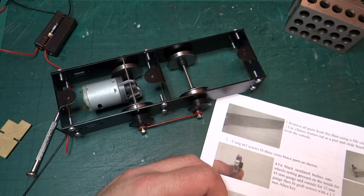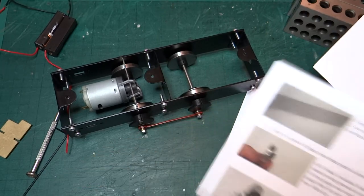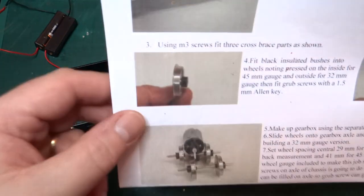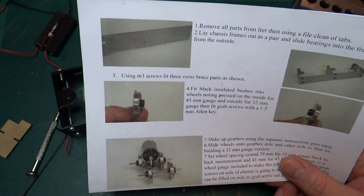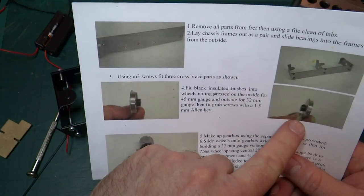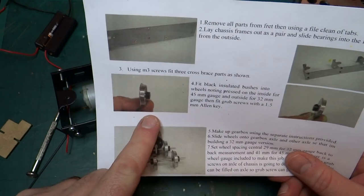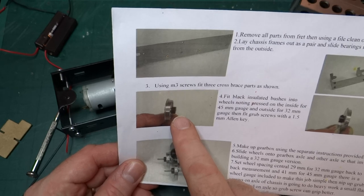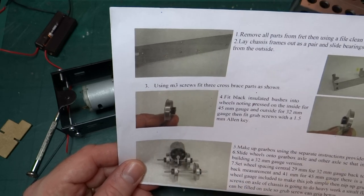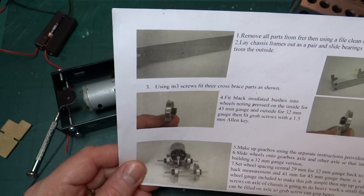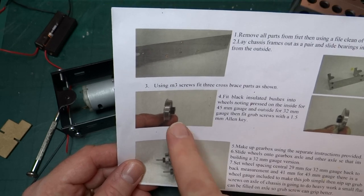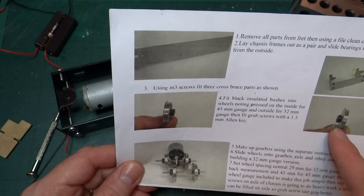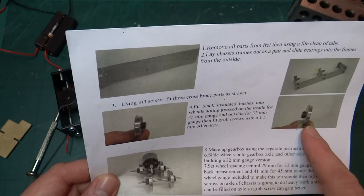The problem comes when you start reading the instructions. Specifically when you start assembling the wheels, you'll find that there are two sets of instructions depending on whether you're assembling for 45mm gauge or 32mm gauge. Specifically this little insulated bush that fits in the centre of the wheel and that holds the retaining screw to keep it on the axle. It's fitted from the outside for 32mm gauge and from the inside of the wheel for 45mm gauge.